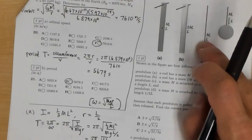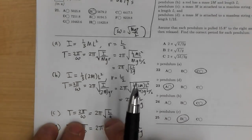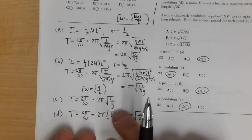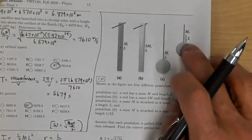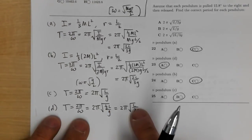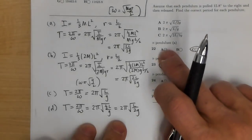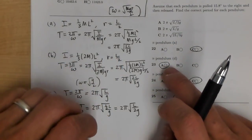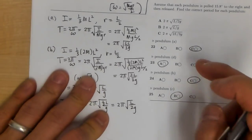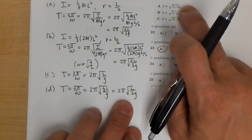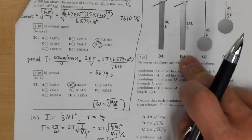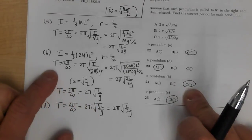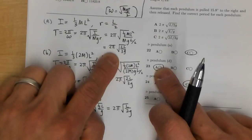For a simple pendulum, T = 2π√(L/g). If the length is changed to L/2, the period becomes 2π√(L/2g). Sorting the pendulums: pendulum a (physical stick) gives 2π√(2L/3g); pendulum d (short simple pendulum, L/2) gives 2π√(L/2g), answer a; pendulum b (doubled-mass physical stick) gives 2π√(2L/3g), answer c; pendulum c (simple pendulum, length L) gives 2π√(L/g), answer b.